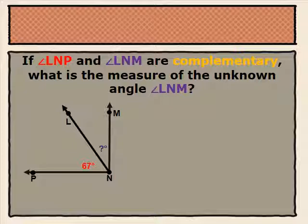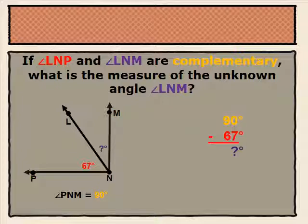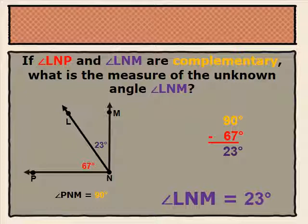If angle LNP and angle LNM are complementary, what is the measure of the unknown angle, angle LNM? Knowing that two angles are complementary tells us that the sum of the two adjacent angles will give us a total of 90 degrees, meaning that angle LNM is part of a 90-degree total. By subtracting our known adjacent angle, we can find our unknown adjacent angle. So we take 90 degrees minus our known angle, 67 degrees, and that gives us 23 degrees. So angle LNM is equal to 23 degrees.